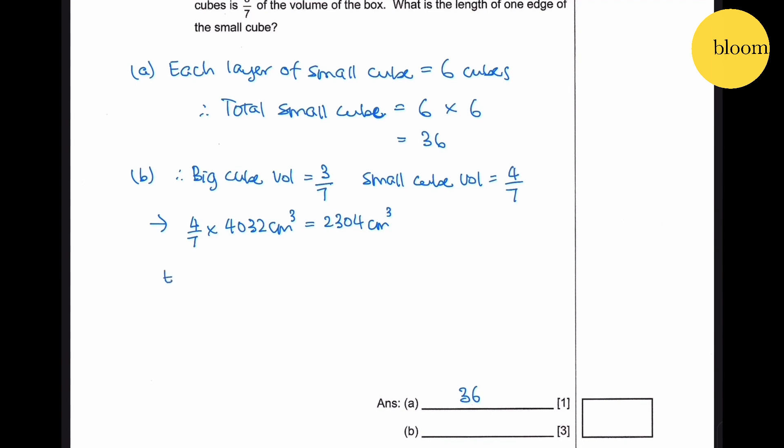So each small cube volume is 2304 divided by 36 which gives us 64 centimeter cube. Edge of small cube is cube root of 64 which gives us 4 cm.